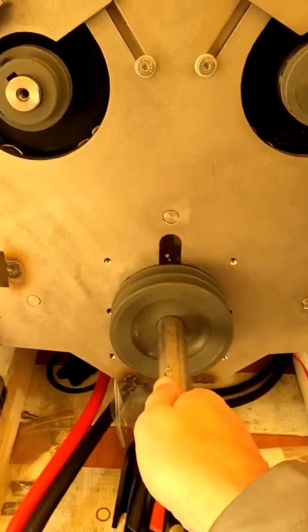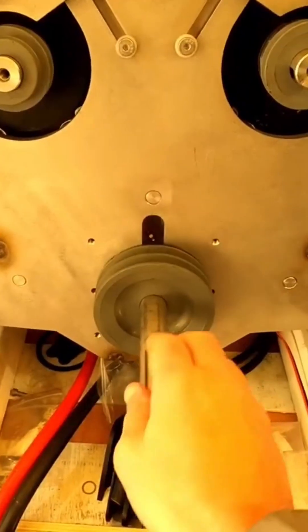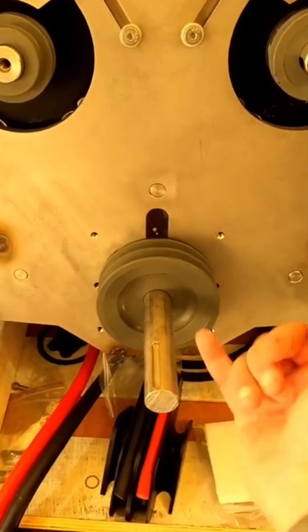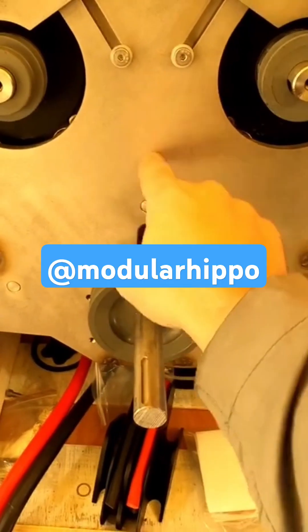This shaft isn't perfectly aligned, it's not perfectly straight. So I need to work out a way to make sure that when I push it through the first bearing into the second bearing...